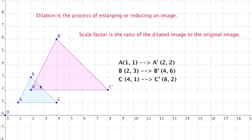In order to find out what scale factor we used for our dilation, what we do is compare our original coordinates with the new corresponding coordinates. If we look at coordinate A here, it's (1, 1), and coordinate A' is (2, 2). Coordinate B is (2, 3), and B' is (4, 6). And coordinate C is (4, 1), and C' is (8, 2).